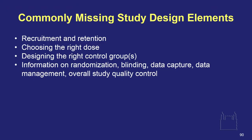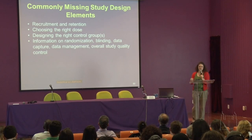Commonly missing study design elements: people do not talk about recruitment and retention in their documents — you need to pay attention to that. They don't talk about how they chose their dose. Designing the right control group — how you decided that was your control group and why you didn't use a different type. They also tend to forget information about randomization, blinding, data capture, data management, and overall study quality control — how you're going to make sure people are really sticking to the protocol, that changes are documented, that training is updated.